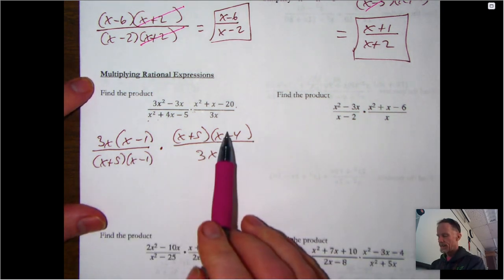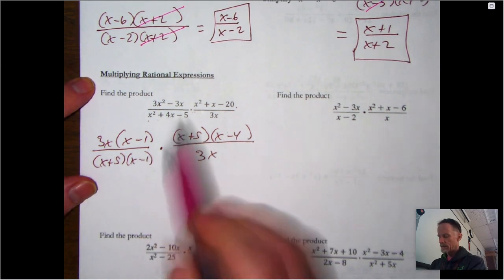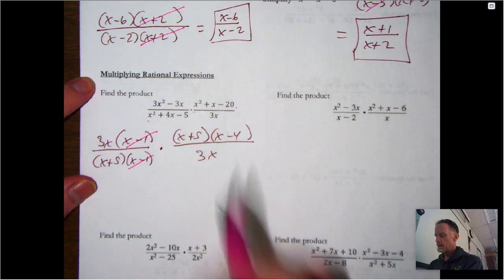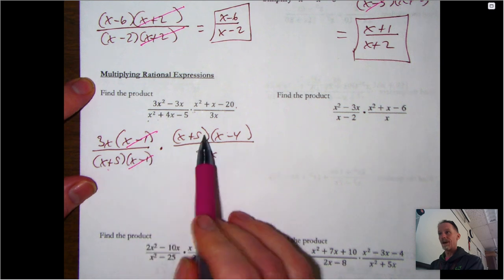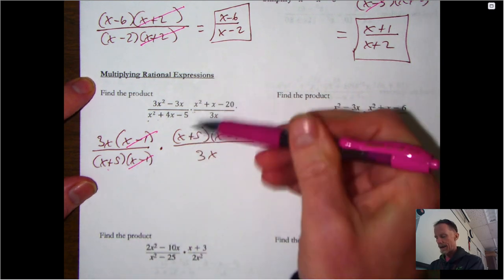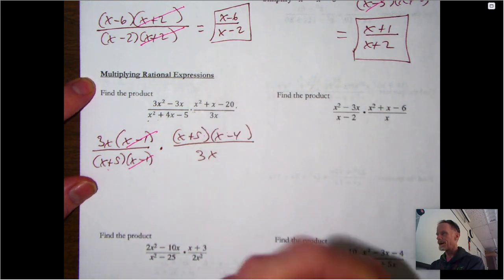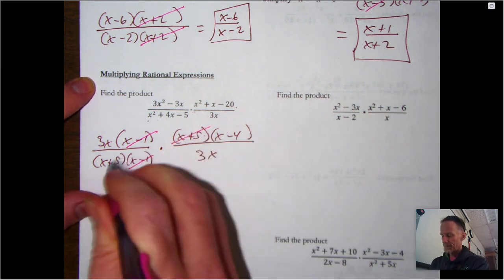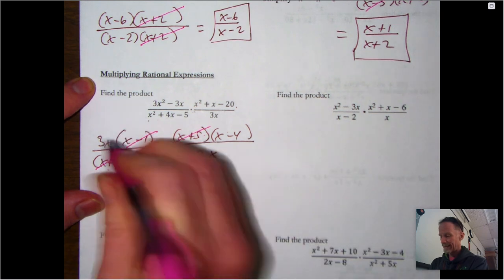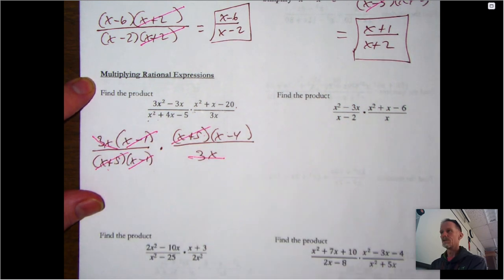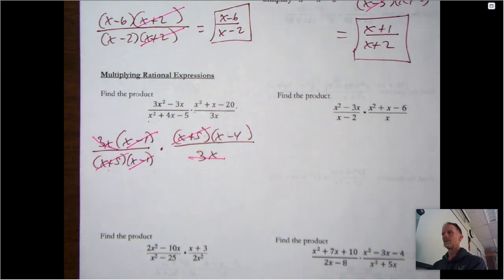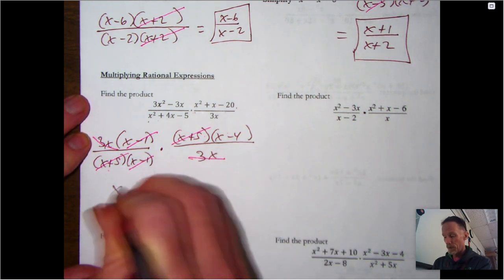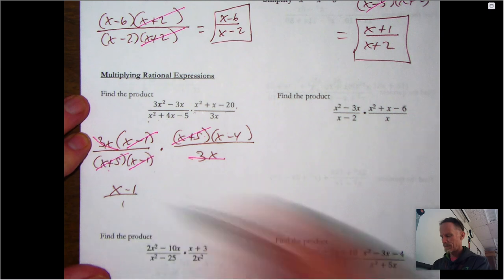When we cancel things out, notice the (x-1)s cancel within the same fraction, but we can even cancel across fractions as long as we're multiplying. The (x+5)s cancel, and the 3x terms cancel as well. So in this case we're just left with (x-4) over 1, which we write simply as x-4.